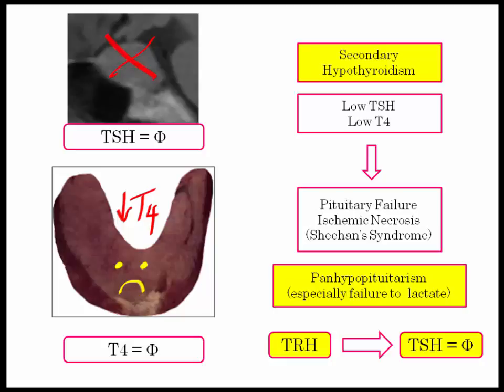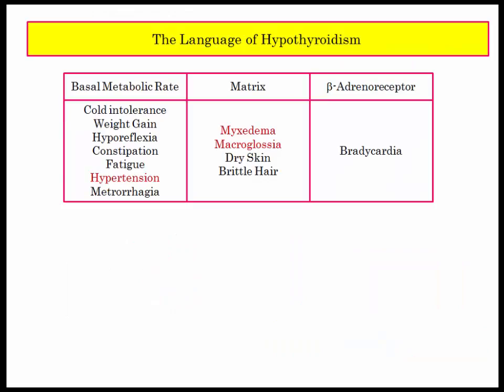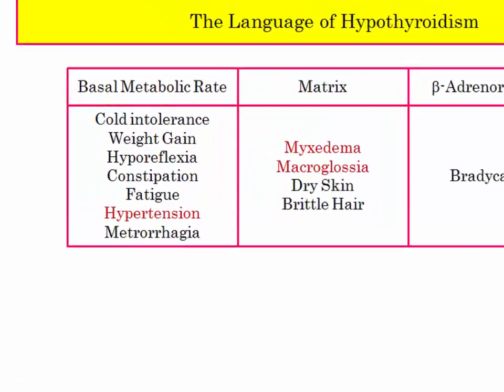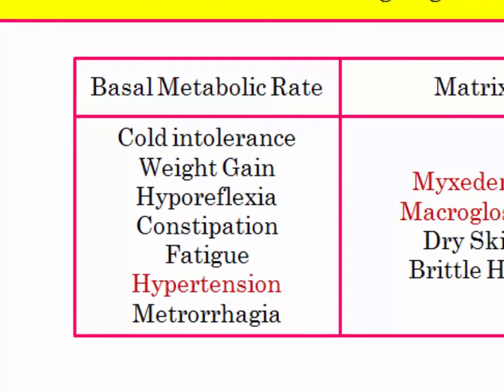Before reviewing the disorders, let's understand the language of hypothyroidism. Patients will be described with abnormalities of metabolic rate, matrix tissues, and the adrenoreceptor. In terms of decreases in the basal metabolic rate, most are familiar with cold intolerance and weight gain. I want to draw your attention to the presence of hypertension — hypothyroidism may be associated with hypertension due to sodium retention. We'll compare that with myxedema coma, where both blood pressure and sodium are low.